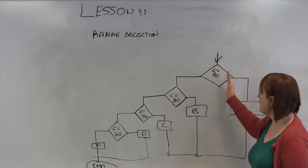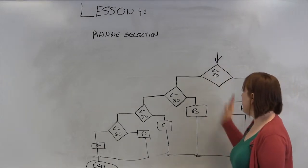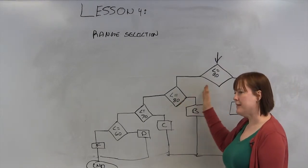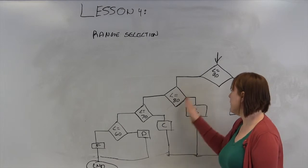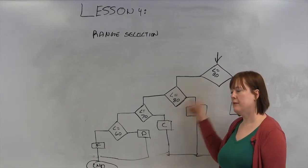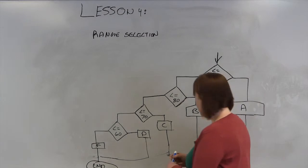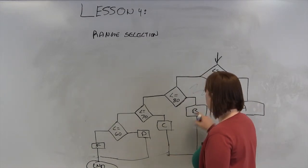You just start with the highest one first and eliminate that. That's As. Anything left? Because it's not greater than 90% at this point. Is it greater than 80%? Okay, it's between 80 and 90. Anything in here is between the two. That makes it a B.